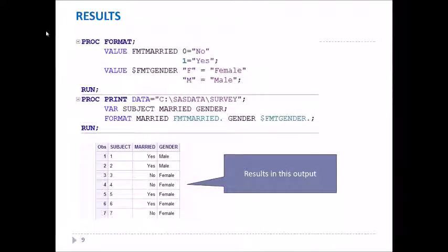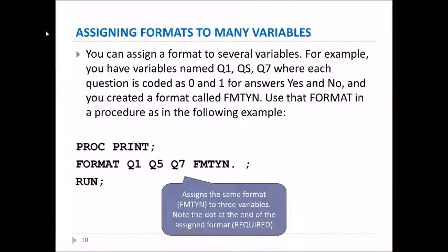The answer you get should be at the bottom of this slide, where you see that the married column and the gender column both now have descriptions rather than 1, 0, or M and F. The code that you could have used is shown at the top of this slide. You can also assign formats to many variables.